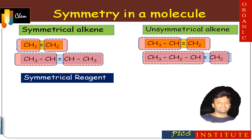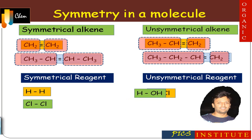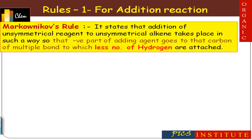The first rule for addition reactions is Markovnikov's rule. It states that addition of an unsymmetrical reagent to an unsymmetrical alkene takes place in such a way that the negative part of the adding agent goes to that carbon of the multiple bond to which less number of hydrogens are attached. For example, with alkene propene and adding agent HCl, the right-hand side part is negative and left-hand side part is positive. Markovnikov's rule and anti-Markovnikov's rule are applicable only when both the alkene and adding agent are unsymmetrical.